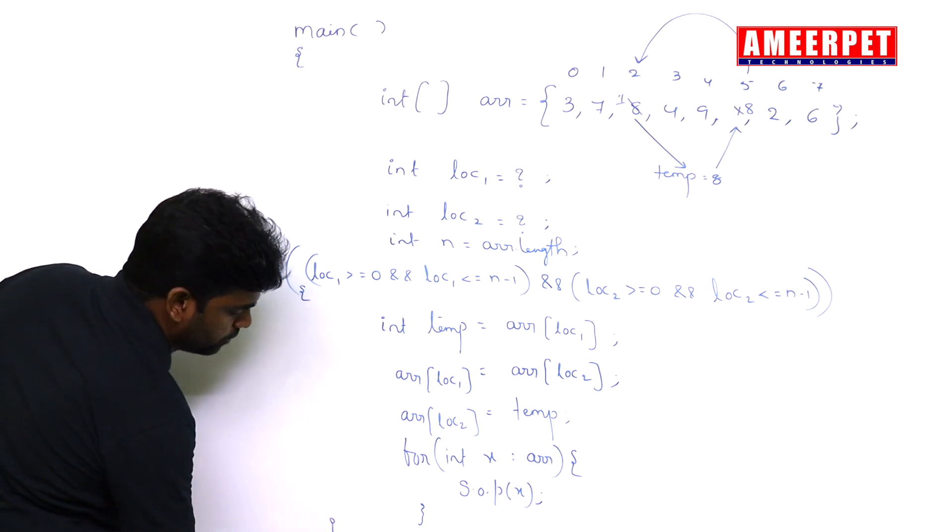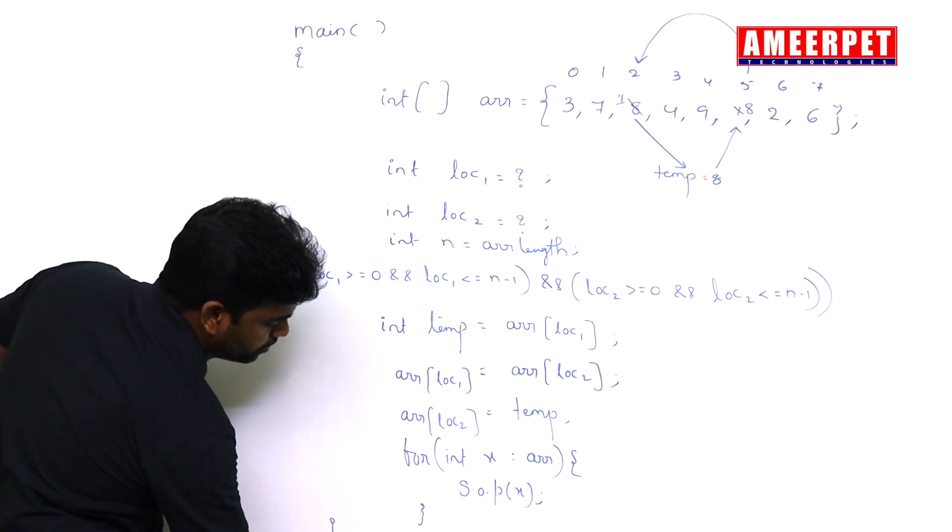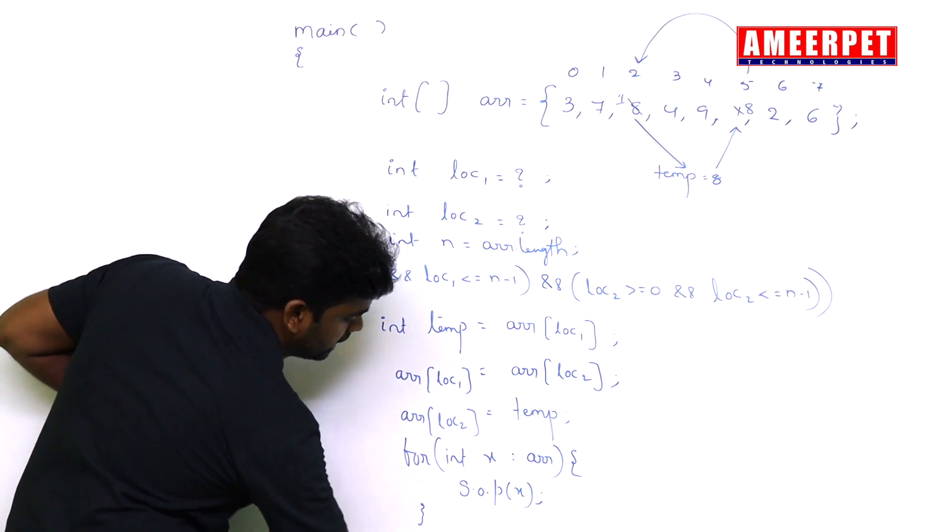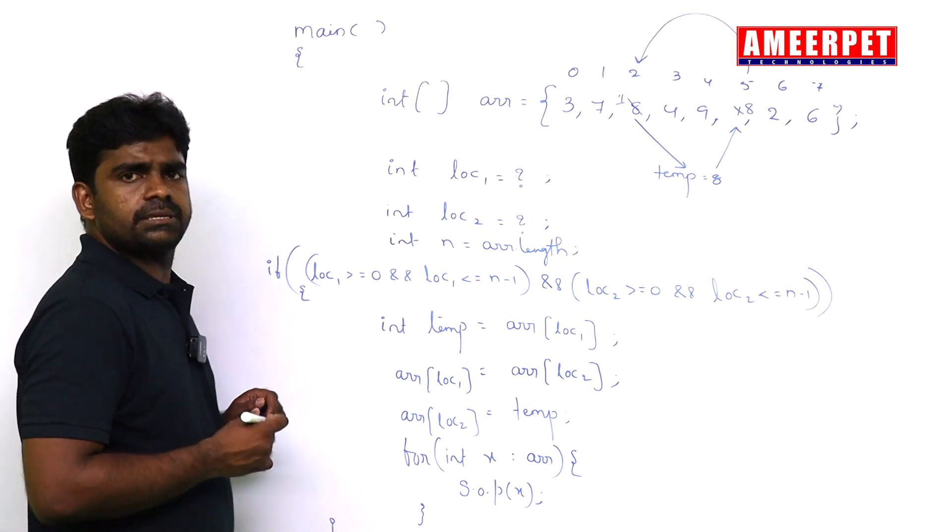If location is not valid in the else block, we are just printing invalid locations given. Simple.